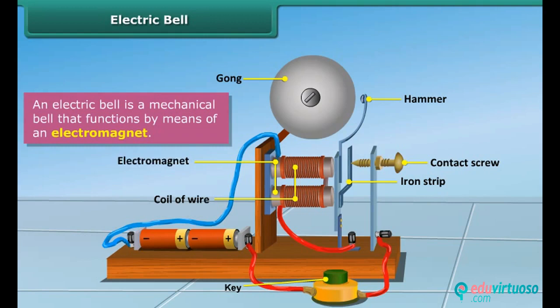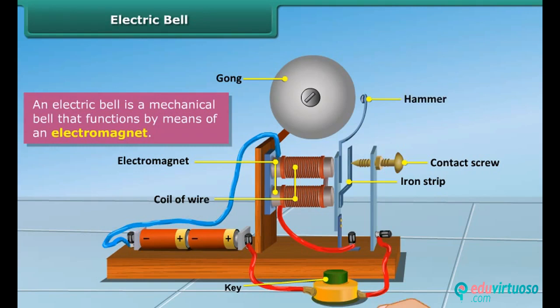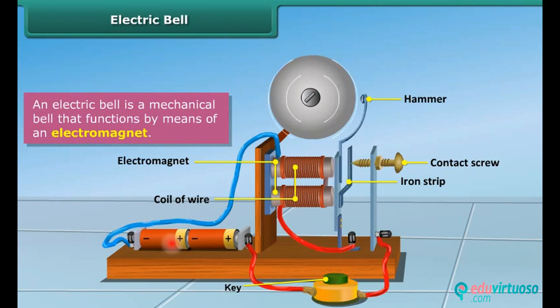It then pulls the iron strip. In the process, the hammer at the end of the strip strikes the gong of the bell to produce sound.